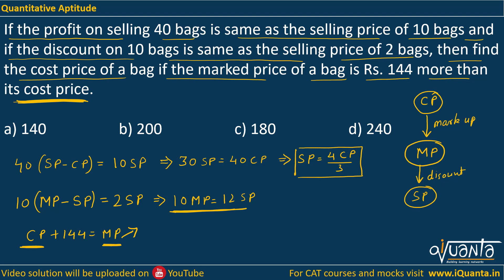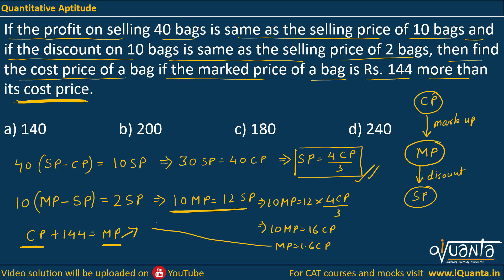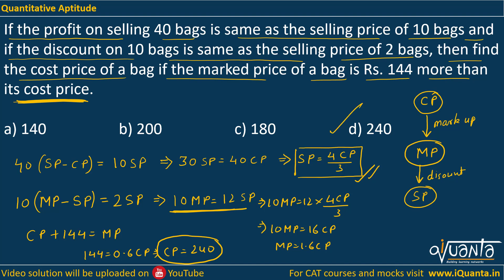Writing 10 MP equal to 12 SP, and substituting SP as 4 CP divided by 3, we get 10 MP equal to 16 CP, or MP equal to 1.6 CP. Putting MP equal to 1.6 CP into the third equation gives 144 equal to 0.6 CP, so CP equals 240. The cost price will be Rs. 240 — option D is the correct answer.